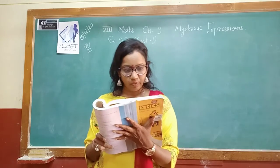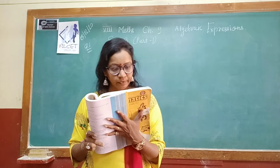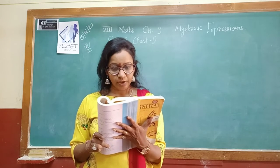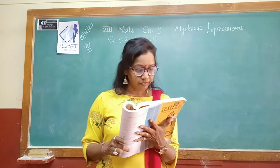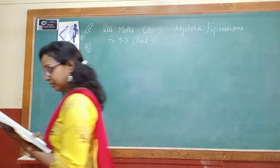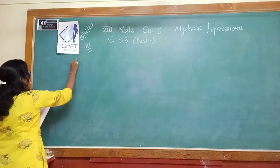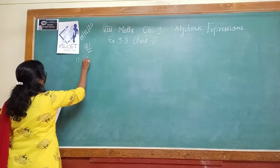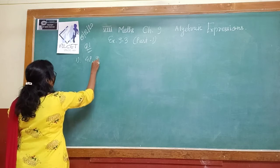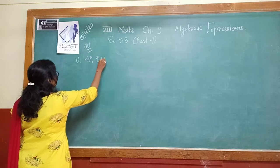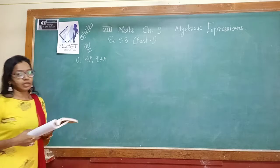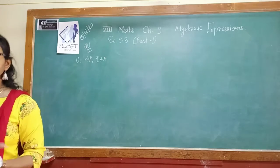First question: carry out the multiplication of the expressions in each of the following pairs. The first pair is 4p multiplied with q plus r. This is a monomial multiplied with a binomial.